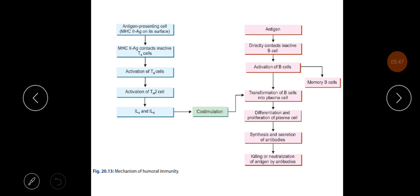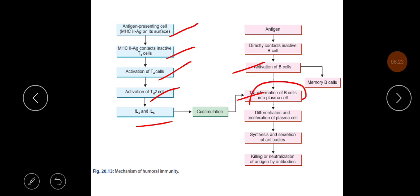In summary, an antigen presenting cell with an MHC class 2 complex on its surface contacts an inactive T4 cell, activating it. This activates TH2 helper cells, which produce interleukins 4 and 5, co-stimulating the transformation of B cells into plasma cells. Alternatively, antigen can directly contact B cells, leading to activation and transformation into plasma cells. Both pathways may also produce memory B cells. Differentiation and proliferation of plasma cells then leads to synthesis and secretion of antibodies, which kill or neutralize the antigens.